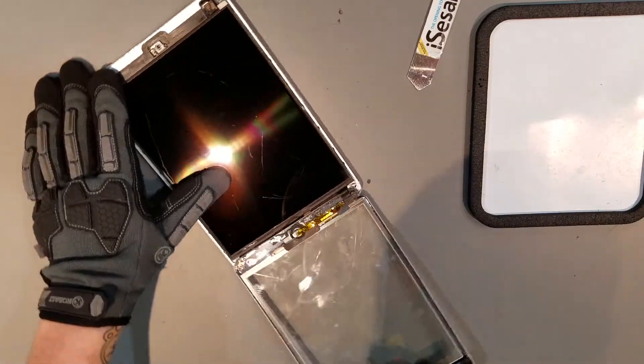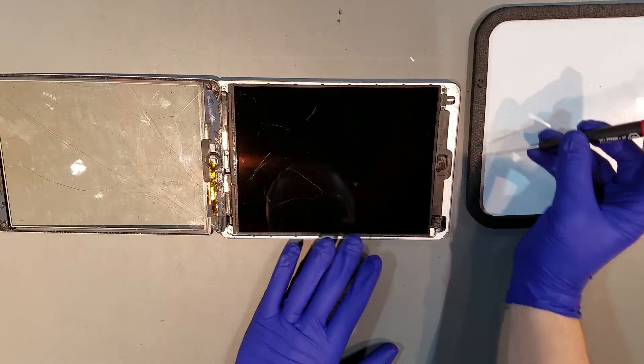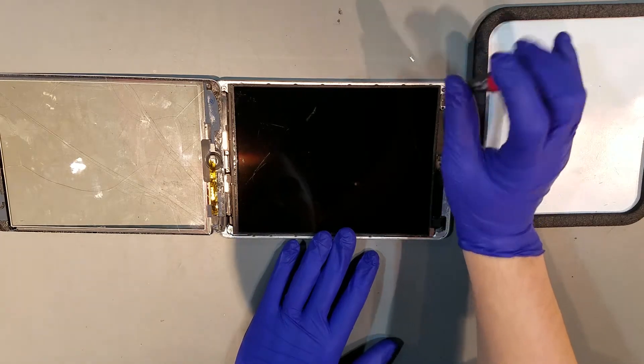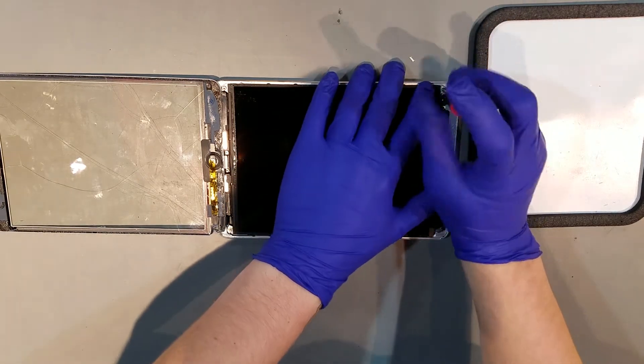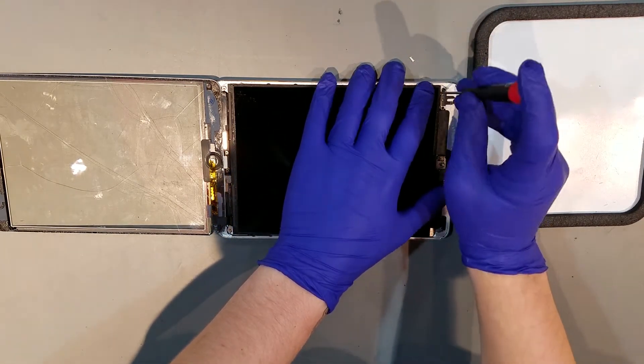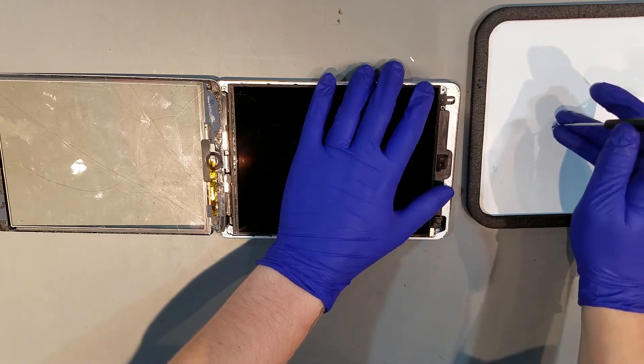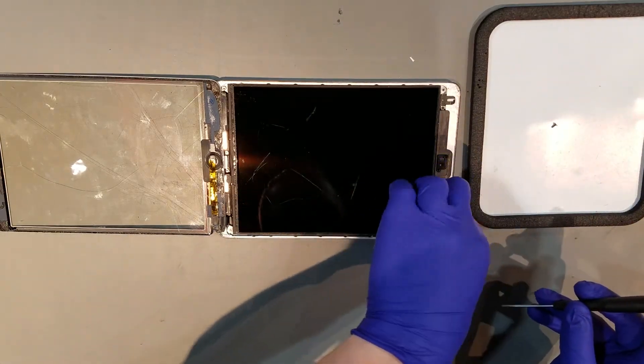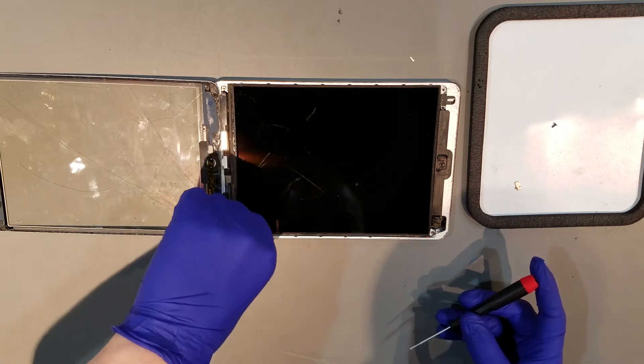Now we can begin to remove the LCD. To start, there will be four phillips screws in each corner of the LCD that will need to be removed. These screws do vary in length, so keep close track of them. You'll also notice that there will be two magnets that will either be stuck to the screws or the glass. You'll want to remove these and save these for the new piece.